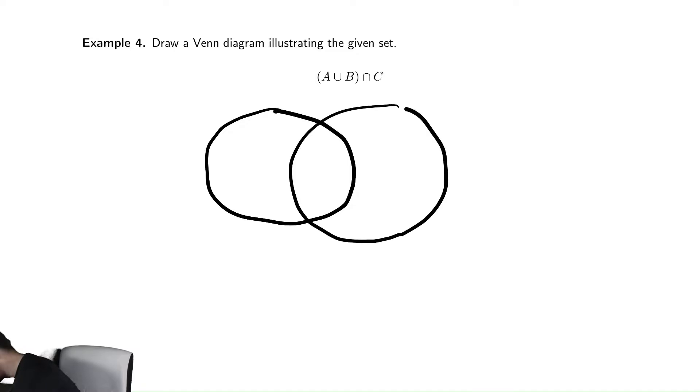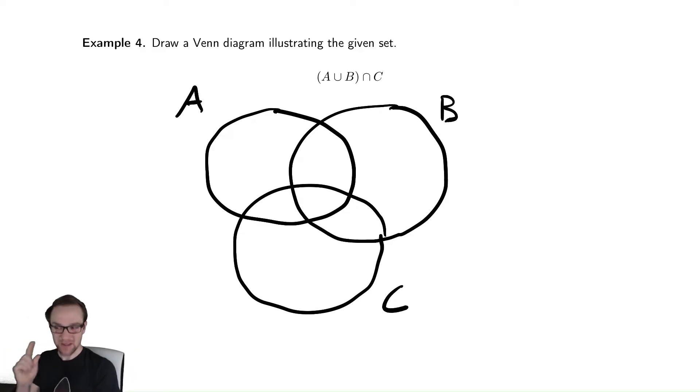So to draw the proper Venn diagram, I'm going to draw three circles that overlap in every possible configuration. This picture is not easy to draw once you get more than three sets, but for now this is how I usually draw this.